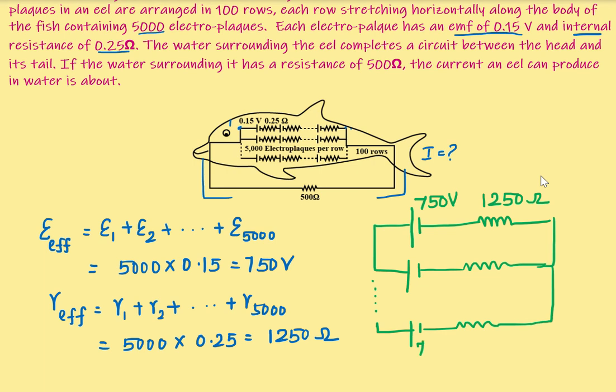This is the 100th one. So 100, 750V and then this is also 1250Ω. This is the 100th row.